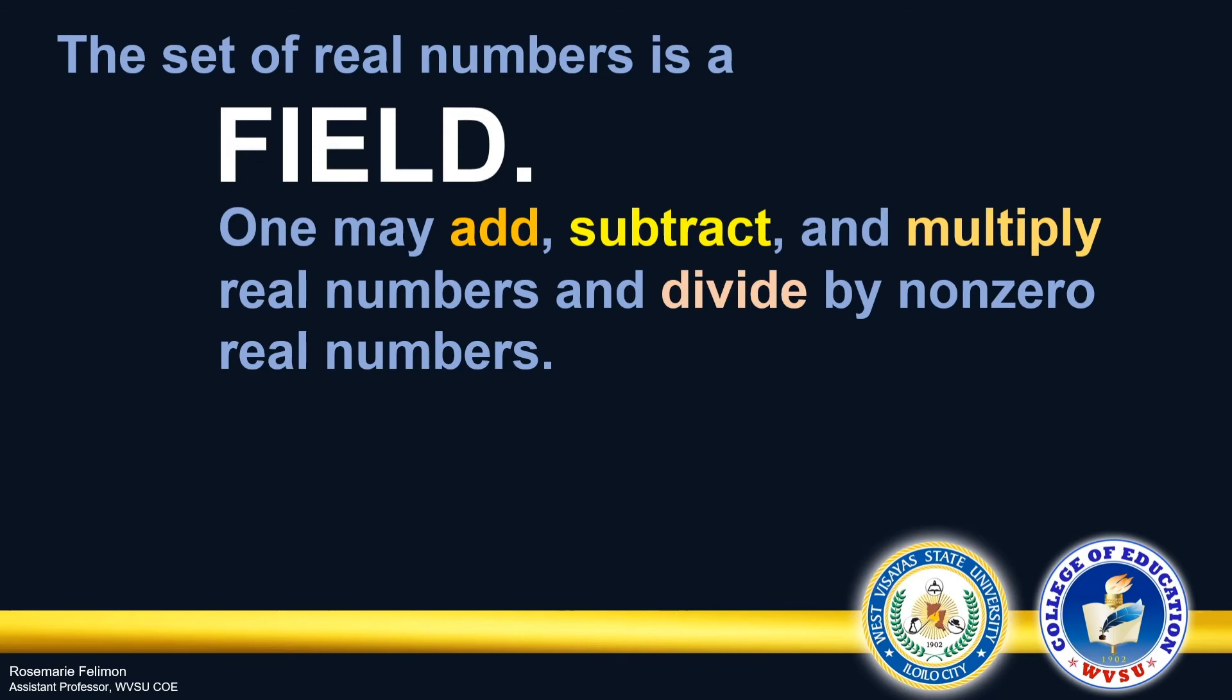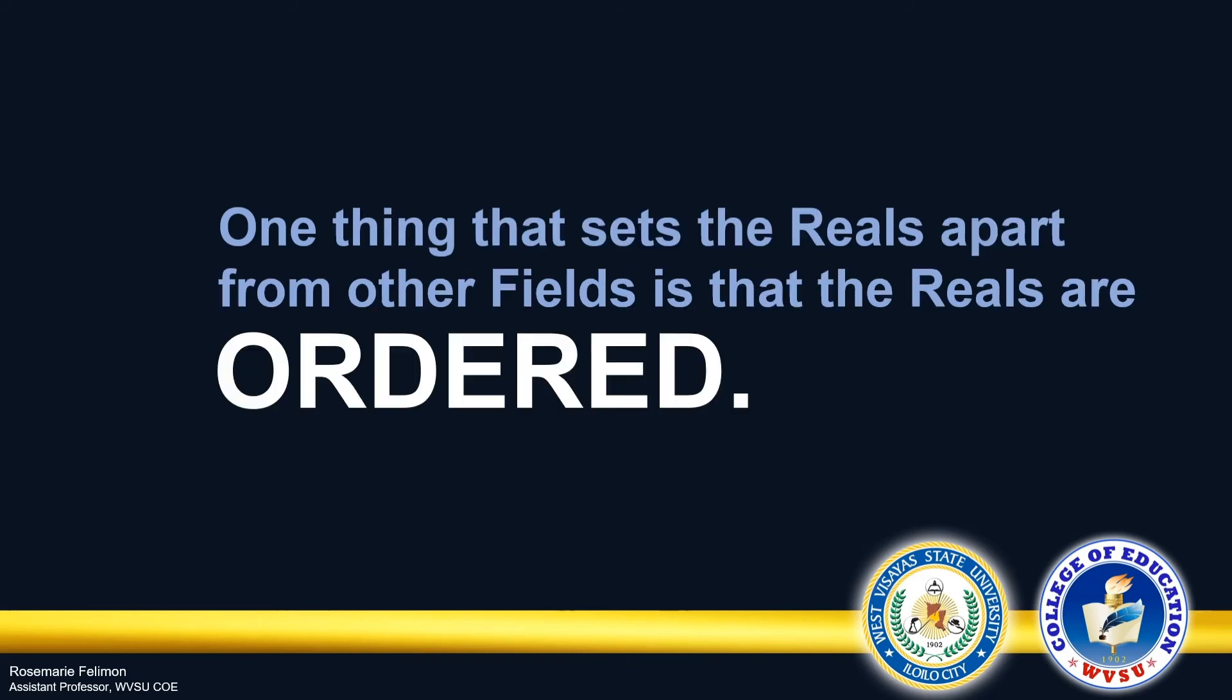So these properties simply show that the set of real numbers is a field. One may add, subtract, and multiply real numbers, and divide by non-zero real numbers. But one thing that sets the real numbers apart from other fields is that the real numbers are ordered.